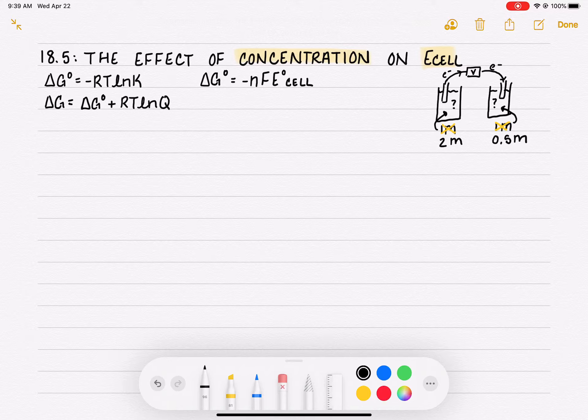In this equation, this would be our non-standard delta G, and it could be non-standard for any reason. Maybe the temperature isn't right, maybe the concentrations of the solutions are not one molar. ΔG° is our standard condition delta G. This would be the one that we would look up in the data table and calculate using Hess's law, products minus reactants.